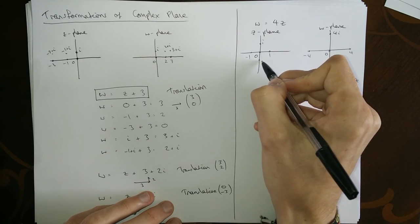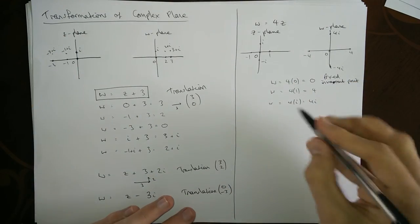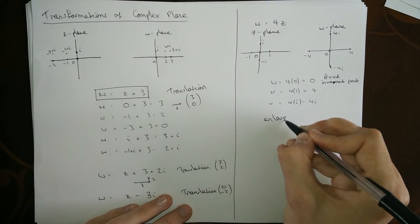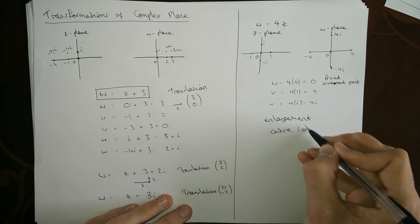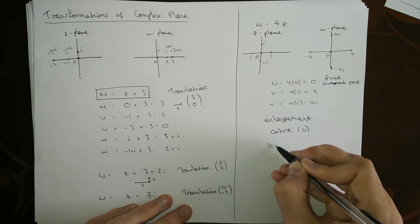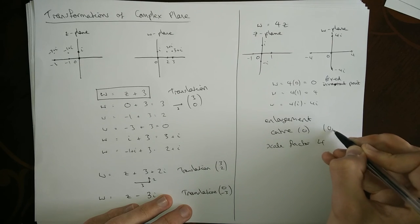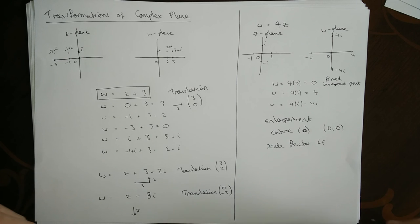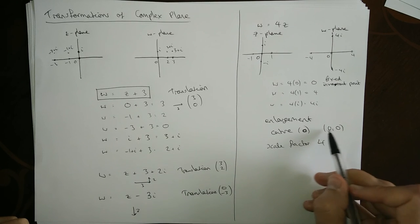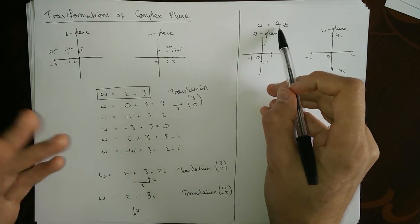Minus one would go to minus four, minus i would go down here to minus four i. The whole thing's just enlarging. This is an enlargement - it's got a center at the origin and it's got a scale factor of four. The single zero is fine because it's a complex number. If you're doing in terms of x and y plane, you'd be doing zero on the x and zero on the y, which is the same thing as saying the complex number is zero.